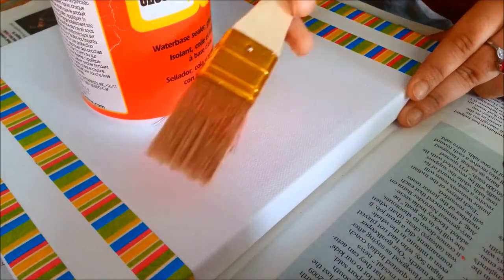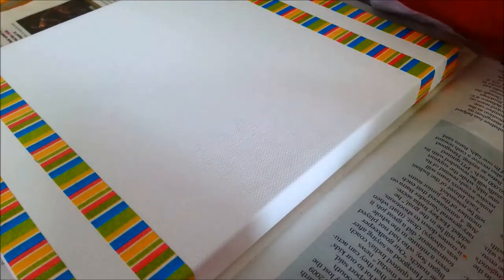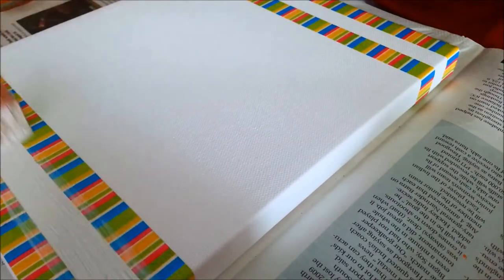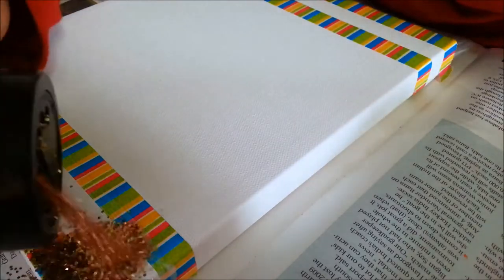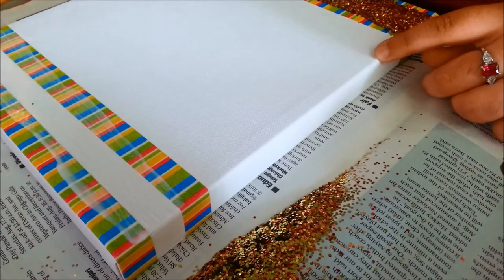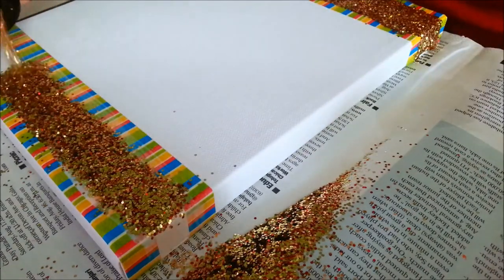Anyways, repeat that on both sides and then just slab on your mod podge in the center of the washi tape. Then just put your glitter on. It's going to be fabulous. Now just tap off the glitter after you're done.